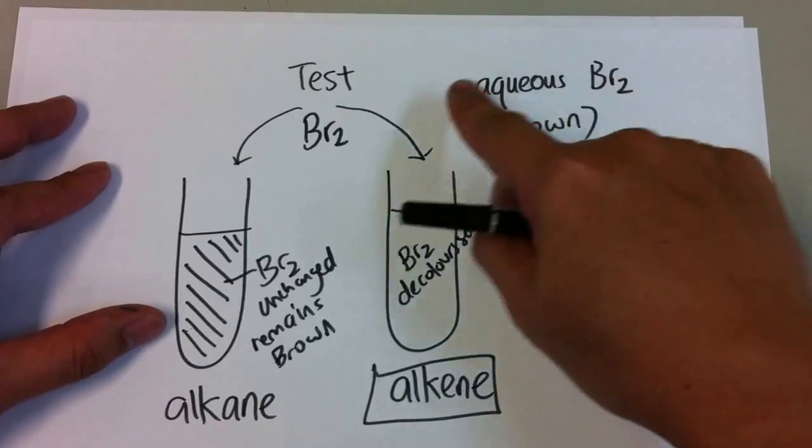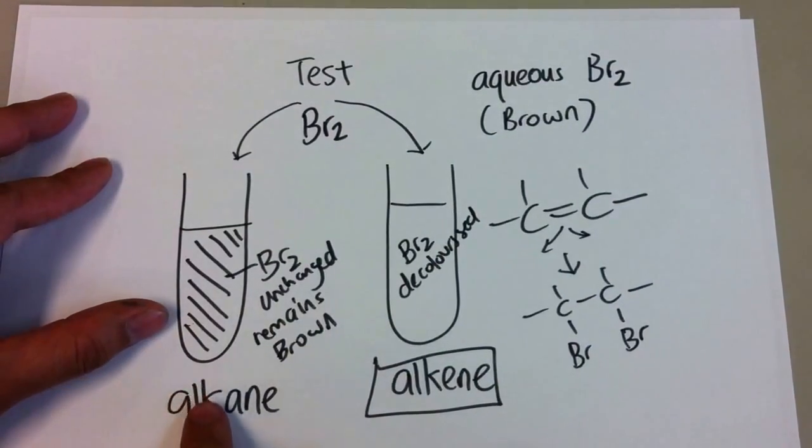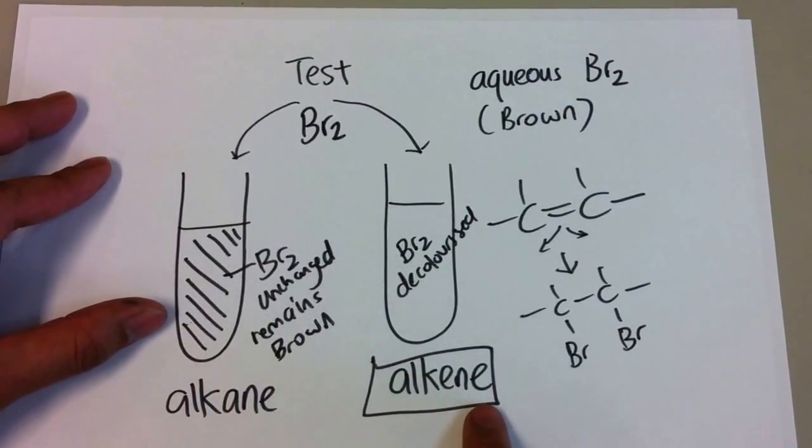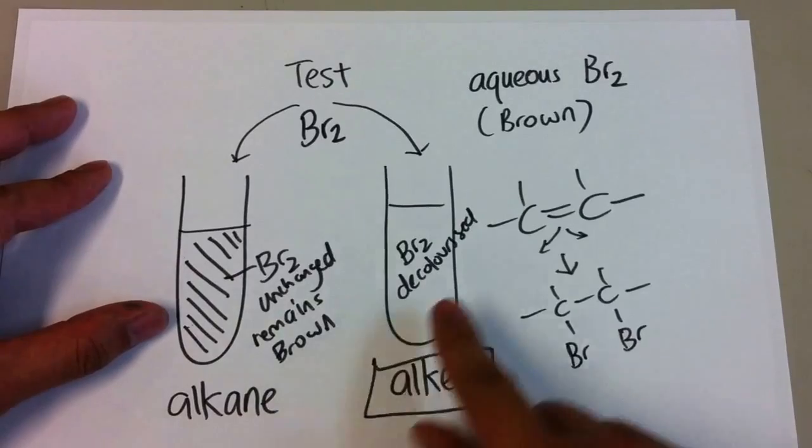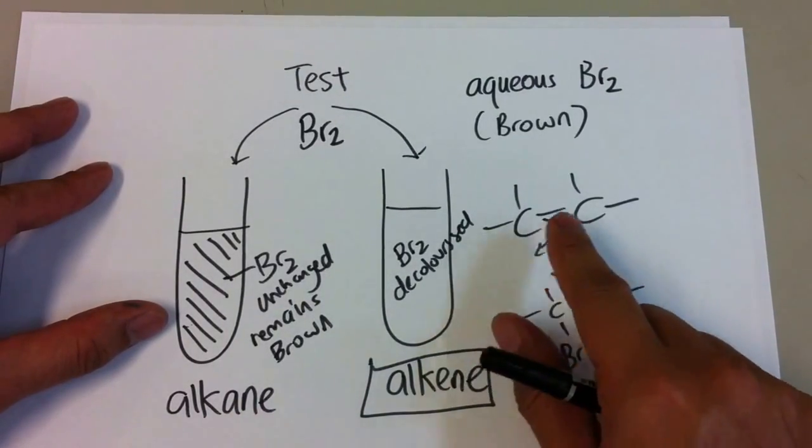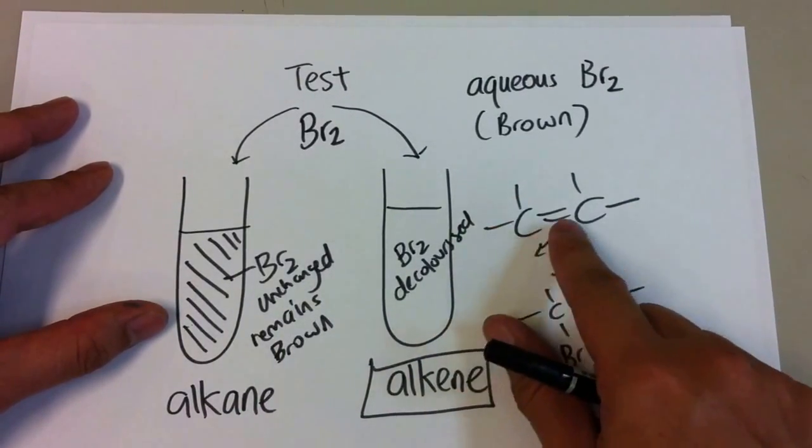Aqueous bromine is used as a test to differentiate between saturated or unsaturated compounds. If the compound is unsaturated, meaning it contains a C double bond,